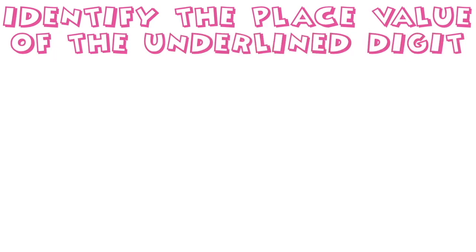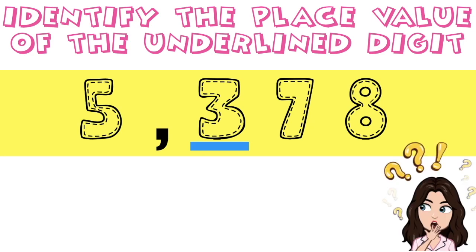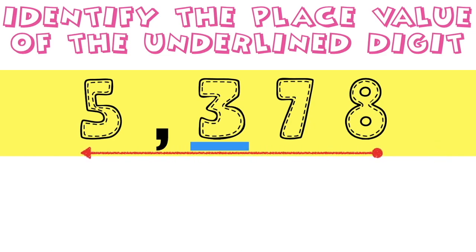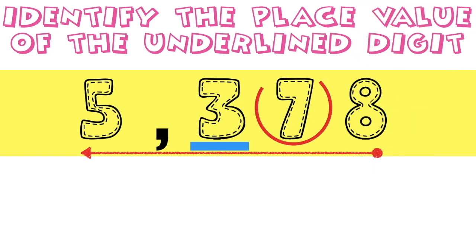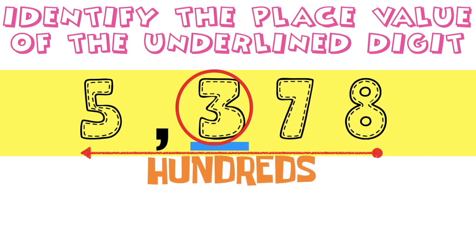Now you are ready to identify the place value of the underlined digit. Let's have the first example: 5,378. What is the place value of digit 3? In identifying the place value, you are going to start from the rightmost digit going to the leftmost digit. Digit 8 is ones, digit 7 is tens. So therefore, digit 3 is hundreds. Very good!